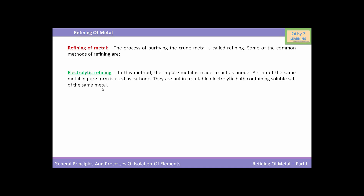The equivalent amount of metal ions dissolve from the anode into the electrolyte, and the impurities fall down below the anode as anode mud. At the anode, metal releases into the electrolyte in the form of metal ions, and at the cathode, metal gets deposited. The impurities fall down below the anode as anode mud. By this way, impurities can be removed.